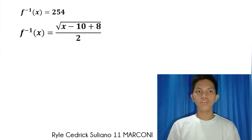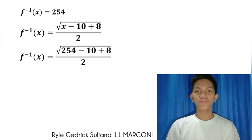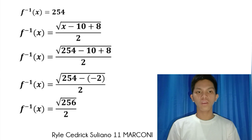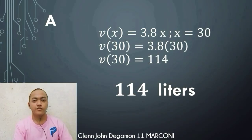To identify the original number, we use the inverse function. Let f inverse of x equal 254, then substitute: f inverse of x equals the square root of 254 minus 10 plus 8, all over 2. Adding negative 10 and 8 gives negative 2, and subtracting from 254 gives 256. The square root of 256 is 16, and 16 divided by 2 is 8. So f inverse of x equals 8, meaning 8 is the original number.